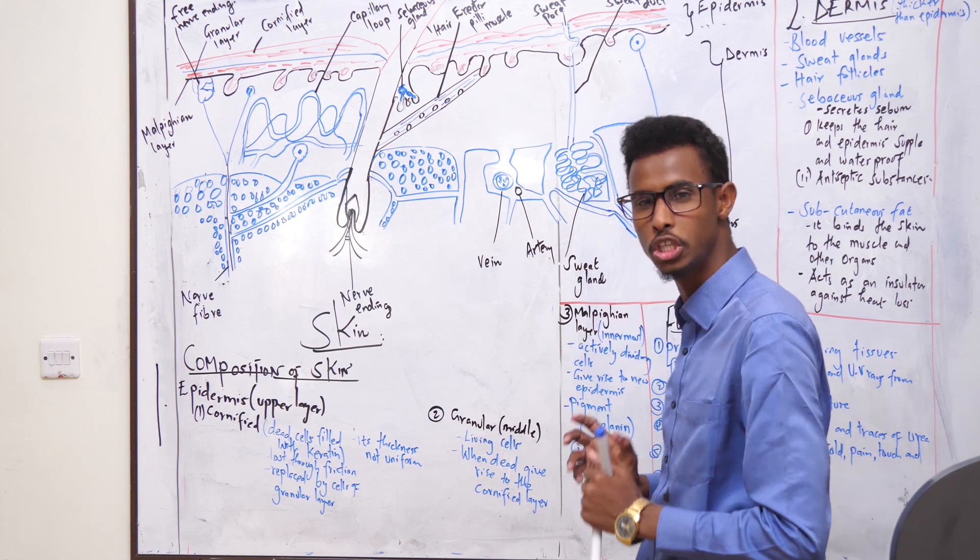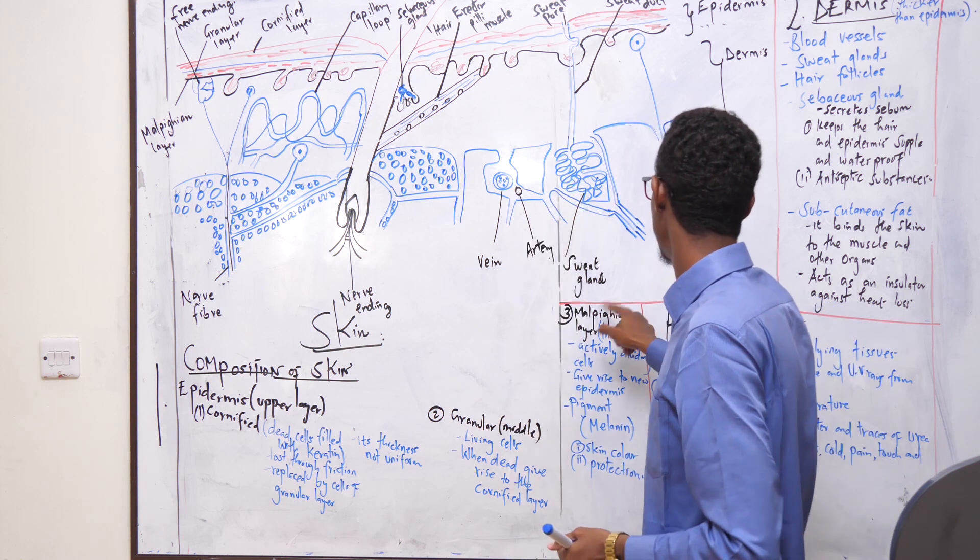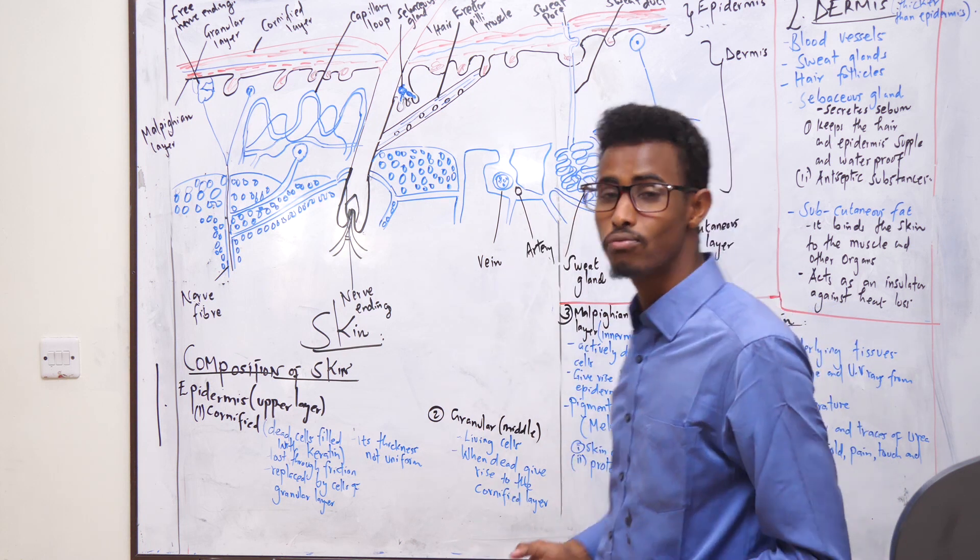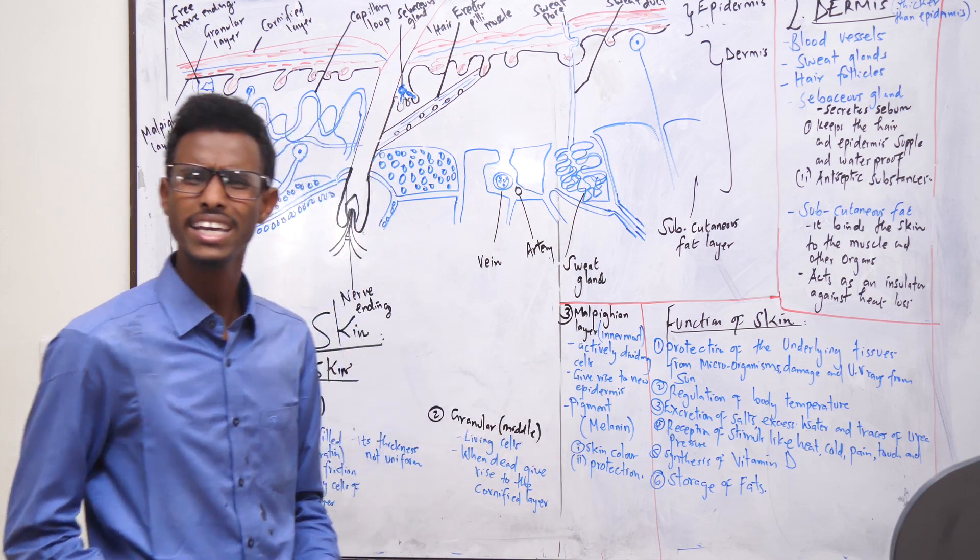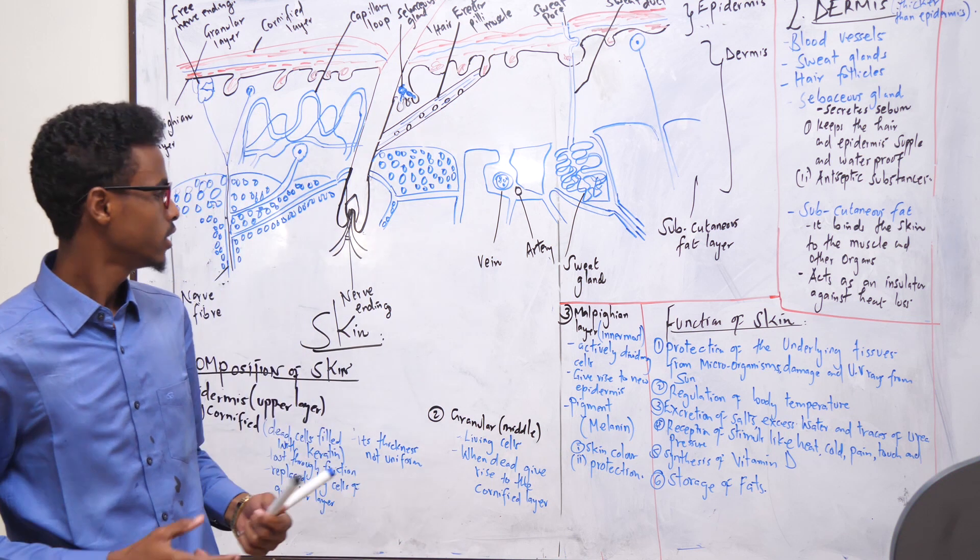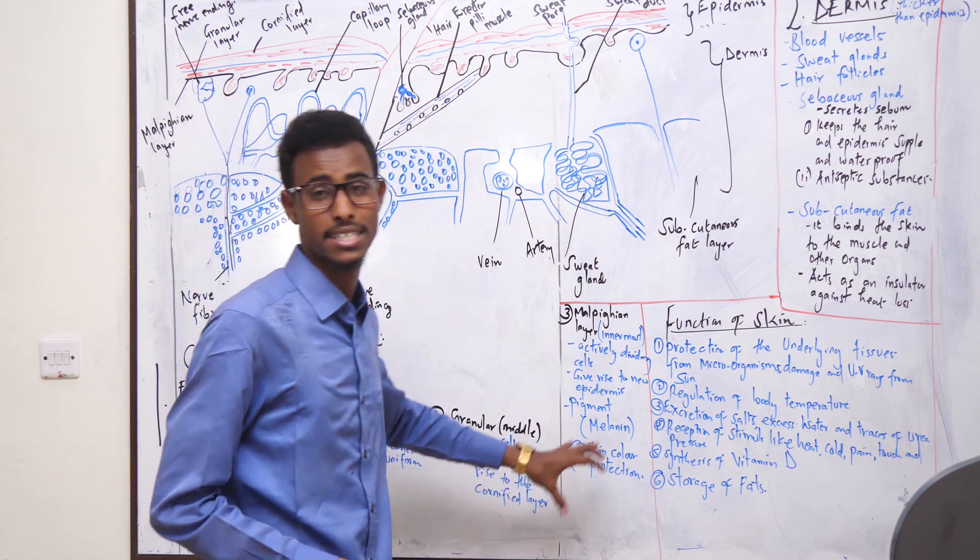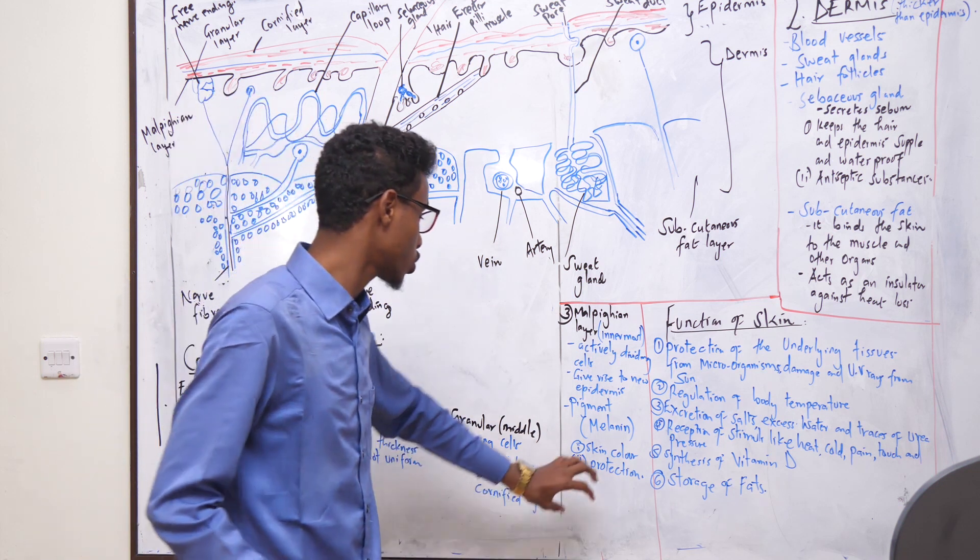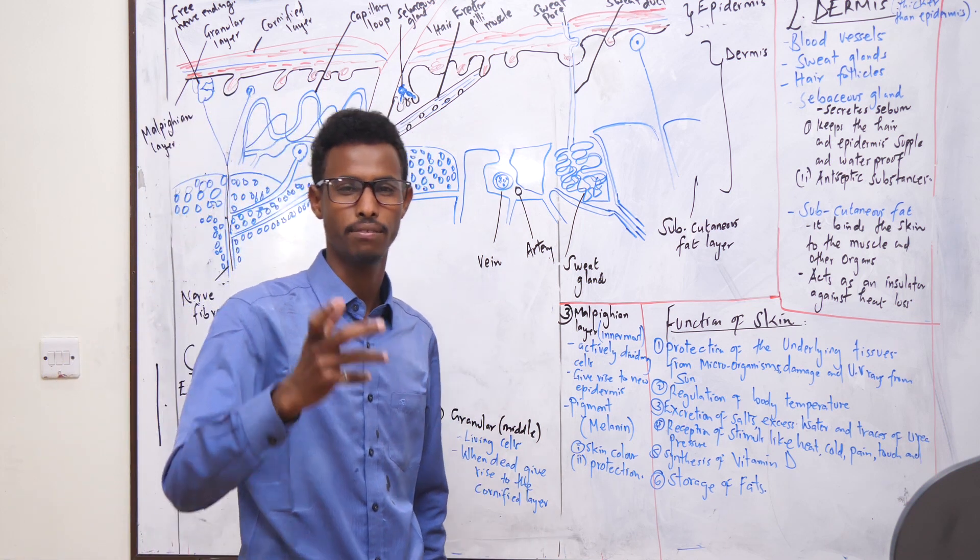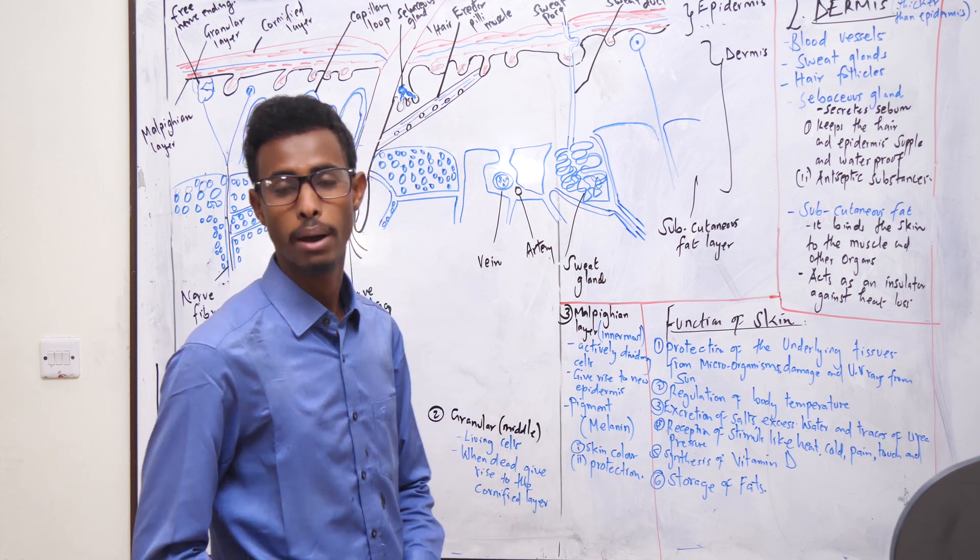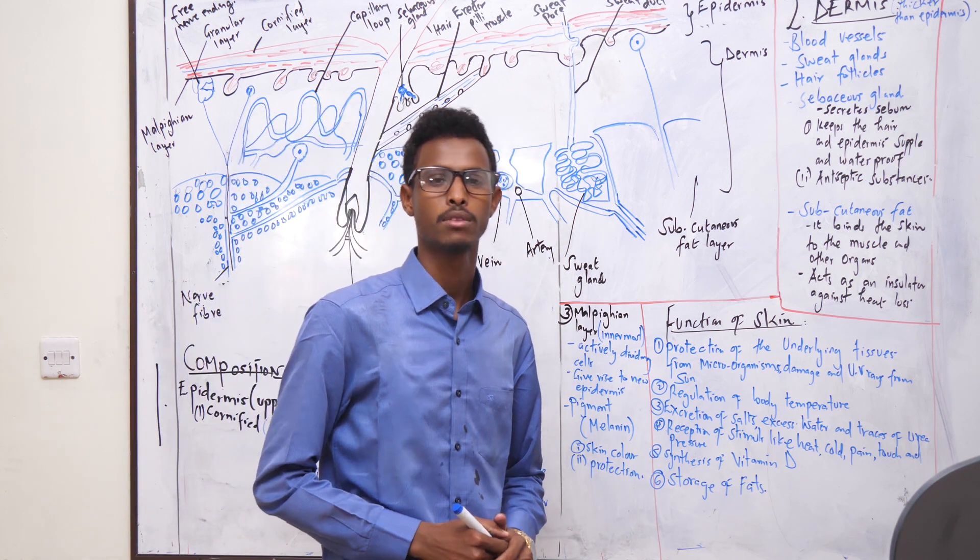Let's go to the malpighian layer. It is found in the innermost layer of the epidermis. It is made up of actively dividing cells, and therefore they give rise to the epidermis. It produces an important pigment called melanin. What is the function of melanin? Number one, it gives the skin its color. Number two, it protects the skin from harmful UV light from the sun - the ultraviolet rays.